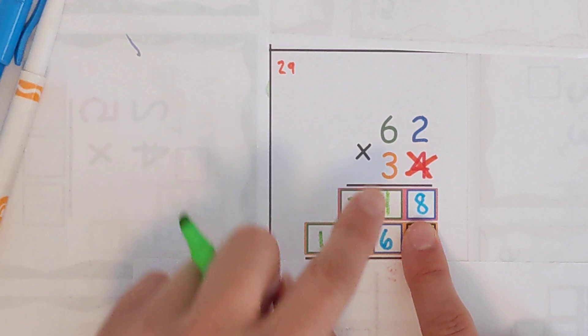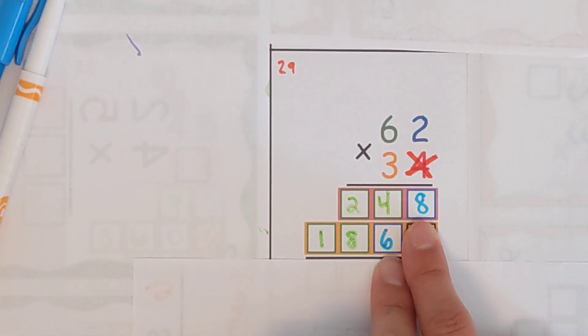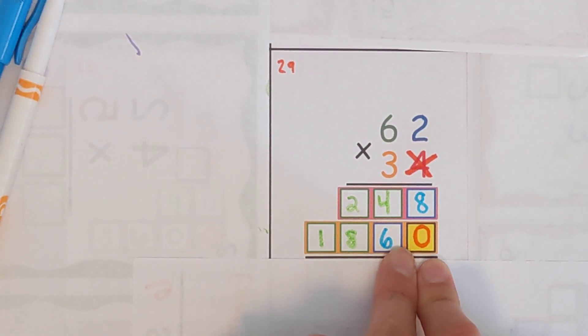So there we go. This is the second row here. 62 times three is 186. 62 times 30 is 186 with a zero on the end or 1860.